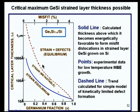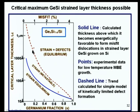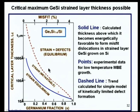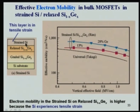For strained silicon on a relaxed SiGe buffer, the approach is: silicon substrate → graded SiGe → relaxed SiGe (with lattice constant governed by x) → thin strained Si layer on top. Because the relaxed SiGe has a larger lattice constant than Si, it stretches the Si layer, creating tensile stress that enhances electron mobility. Larger x gives a larger lattice constant and more tensile stress. At x = 0.13, electron mobility is significantly above the bulk Si value; at x = 0.28, it is even higher.